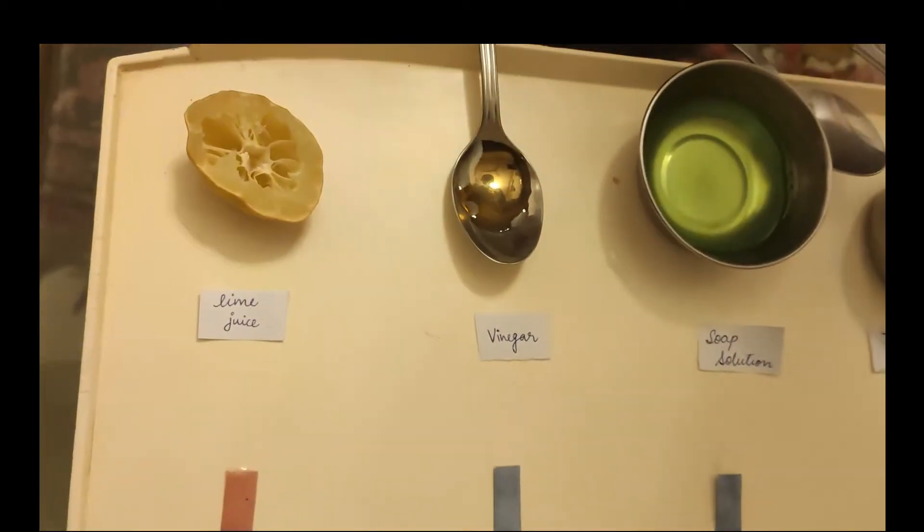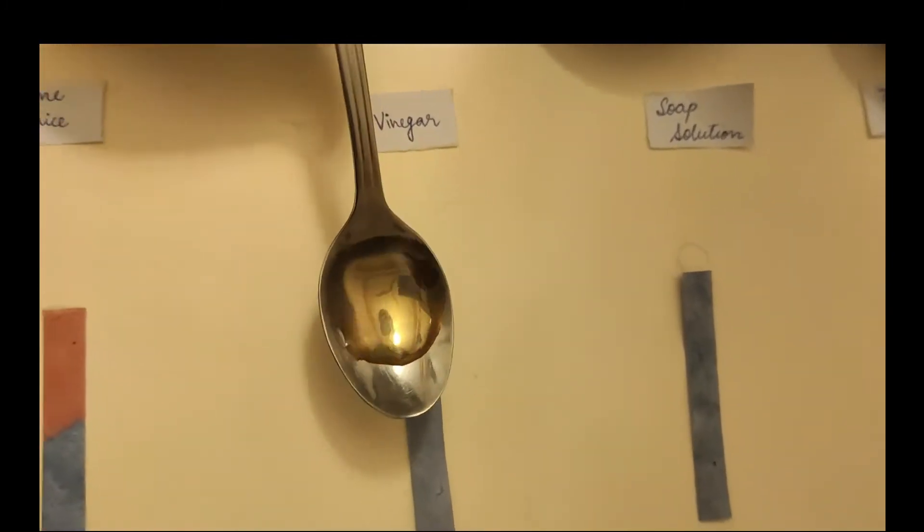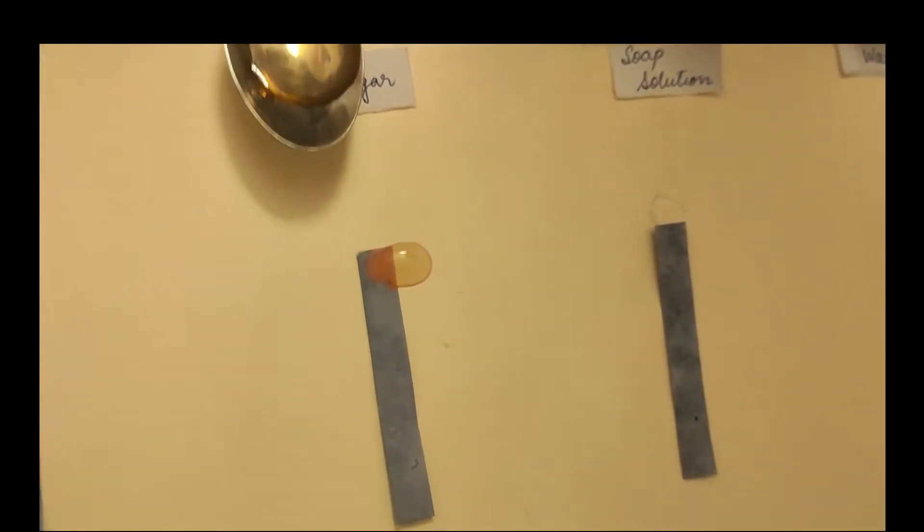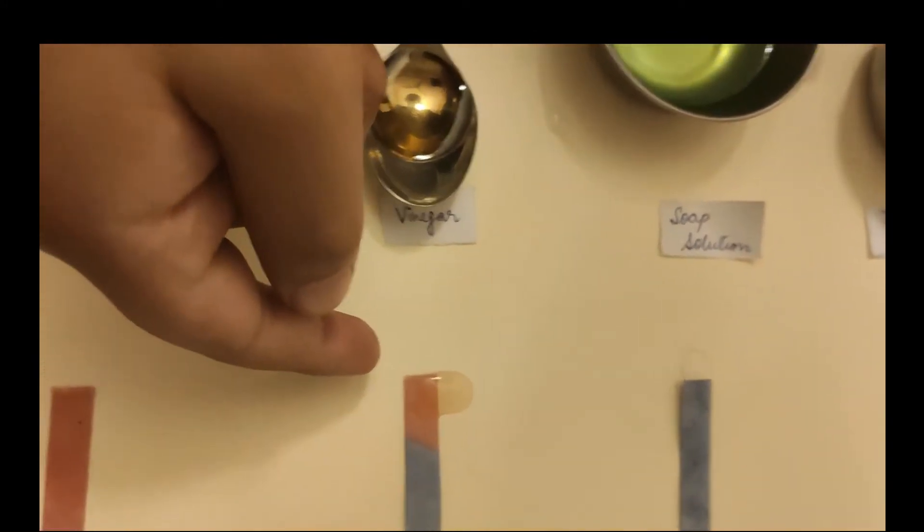Now, let's see about the vinegar. Just gently. Here we see again, that the litmus paper turned red.